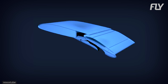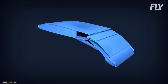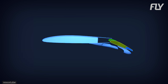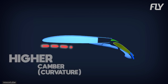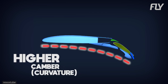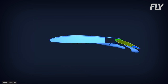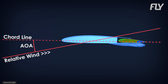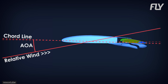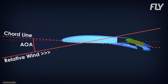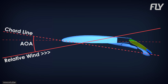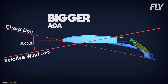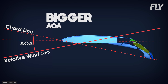When flaps are deployed, the wing's area gets bigger. Plus, the camber increases because flaps change the shape of the wing by adding more curvature to it. Not only that, the angle of attack increases because the effective chord line, which runs from the leading edge of the wing to the trailing edge of the flap, pivots up. Now the angle between the new chord line and the relative wind gets bigger.